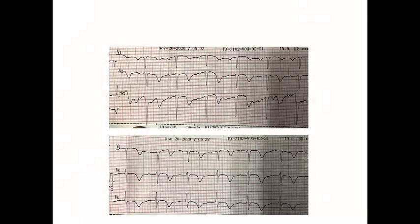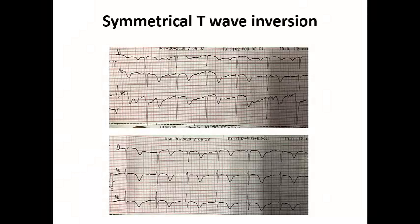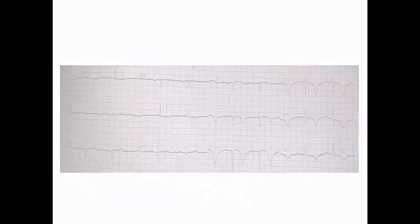In this ECG example, we have evidence of symmetrical T-wave inversion in the precordial leads. They appear to be less than 5 mm, so they are not considered deep, but they are clinically significant symmetrical T-wave inversions suggestive of myocardial ischemia — especially because they are symmetrical.